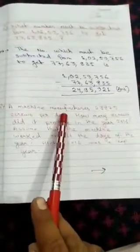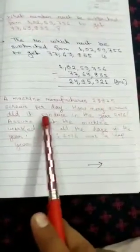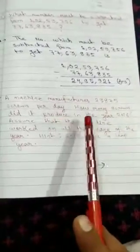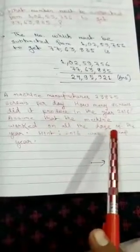Now Question No. 4. A machine manufactures 23,875 screws per day. How many screws did it produce in the year 2016? Assume that the machine worked on all the days of the year. Hint, 2016 was a leap year.